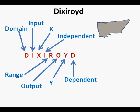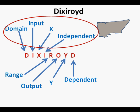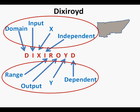All of these words represented by the first four letters of Dixieroid represent the same thing: domain, input, x, and independent. And all of these words represented by the last four letters of Dixieroid represent the same thing: range, output, y, and dependent. Analyzing further: domain pairs with range, input pairs with output, x pairs with y, and independent pairs with dependent.